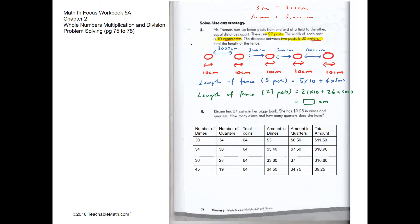We're drawing a picture for just five posts. For five posts, each post is 10 centimeters wide and the distance between the posts is 3000 centimeters. So the total length of the fence for five posts would be 5 times 10, because we have five posts, and the distance between them would be 4 times 3000.